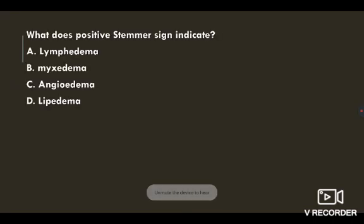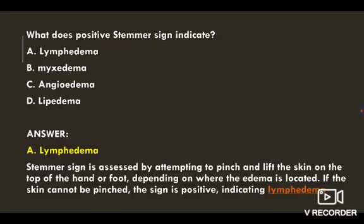Next question: what does a positive Stemmer sign indicate? Options: lymphedema, myxedema, angioedema, lipedema. The correct answer is lymphedema. The Stemmer sign is assessed by attempting to pinch and lift the skin on the top of the hand or foot, depending on where the edema is located. If the skin cannot be pinched, the sign is positive, indicating lymphedema.